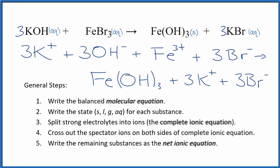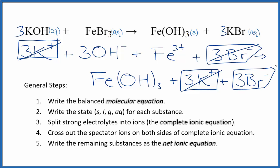We can now cross out the spectator ions. They're on both sides. In the reactants, I have three potassium ions, and I also have that in the products, so these are spectator ions. Cross those out. I have three bromide ions in the reactants and products, so cross those out.